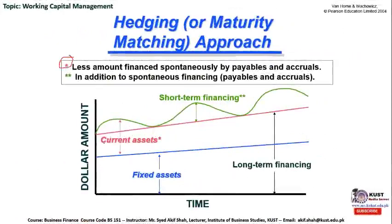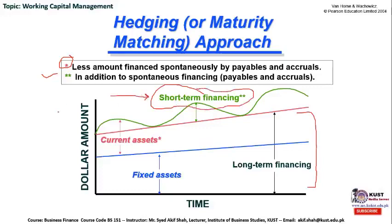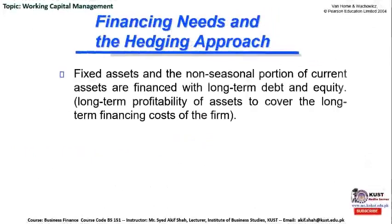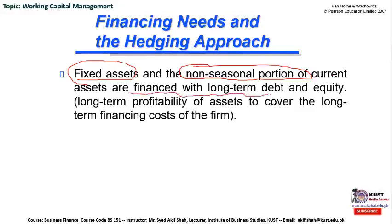Less amount is financed spontaneously by payables and accruals because fixed assets and permanent current assets are financed with long-term financing. In addition to spontaneous financing, the company contacts depository institutions for short-term financing to meet seasonal requirements. In conclusion, fixed assets and the non-seasonal portion of current assets are financed with long-term debt or equity, because the long-term profitability of assets covers the long-term financing cost of the firm. This is the principle of the hedging or maturity matching approach.